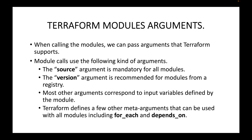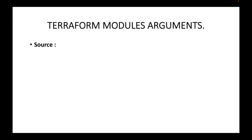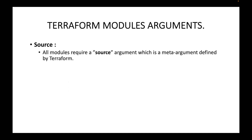These are the arguments we can pass when defining our module block: source, version, variables defined in the root module, and some meta-arguments. Let's look at each one in detail. First, the source argument — all modules require a source argument, which is a meta-argument defined by Terraform. Basically, the source argument is mandatory.